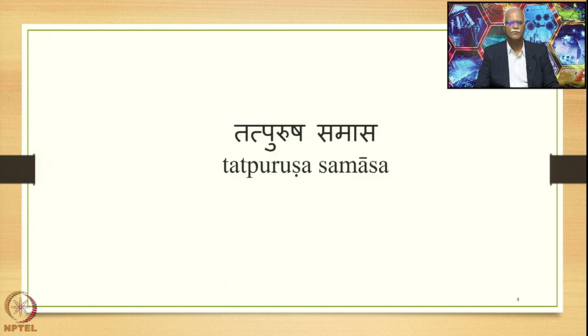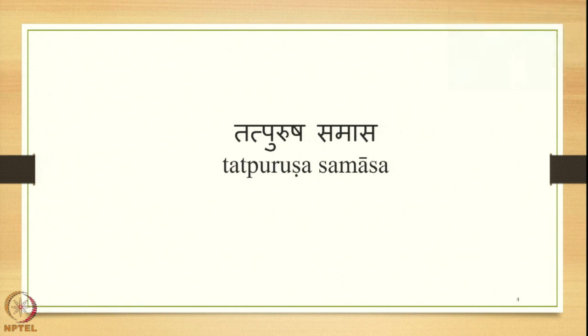In this course we are concentrated on studying the Tatpurusha Samasa. Tatpurusha Samasa is one of the major types — four types of Samasas in Sanskrit: Avyayibhava, Tatpurusha, Bahubrihi, and Dvandva, in that order as stated in the Ashtadhyayi. Tatpurusha Samasa is by far the most productive of all the Samasas.